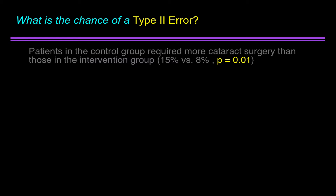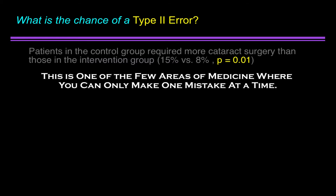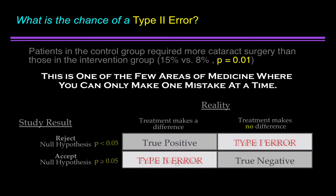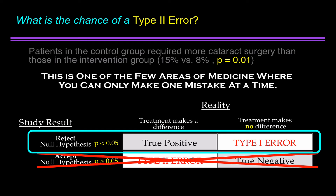What's the chance of a type 2 error? This is one of the few areas of medicine where you can only make one mistake at a time. Look at the 2x2 table — you're on this row. If you're on this row, you can't be down here. You can't make a type 2 error once you've rejected the null hypothesis.